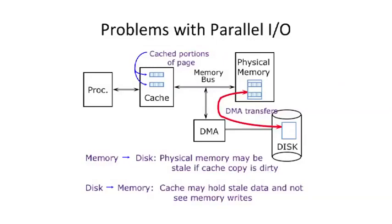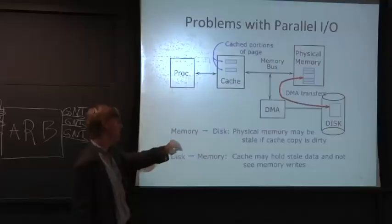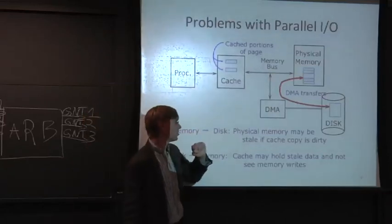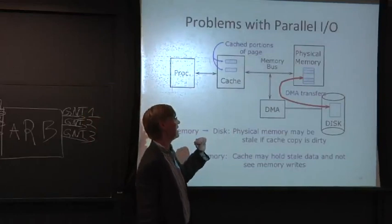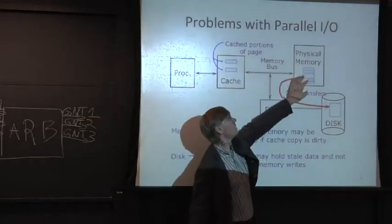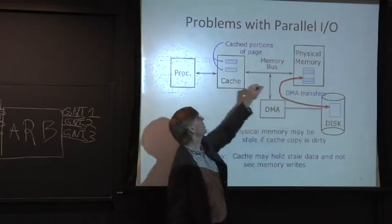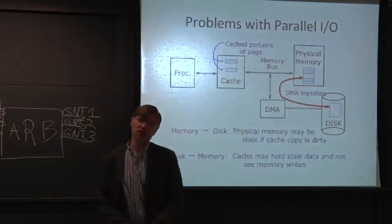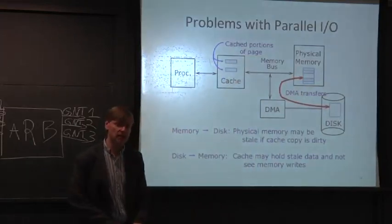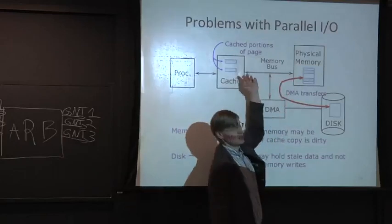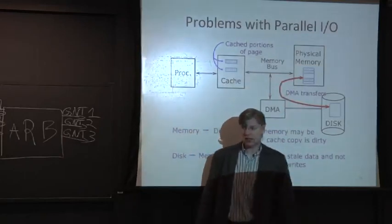Likewise, so that's disk to memory—you might get stale data in the cache. Likewise, you could have memory trying to go to disk here. So let's say you start to have a DMA transfer from main memory to disk, but you might have data in the cache here. Let's say it's a write-back cache. Well, this transfer could get started, but it could miss updated data here in the cache.